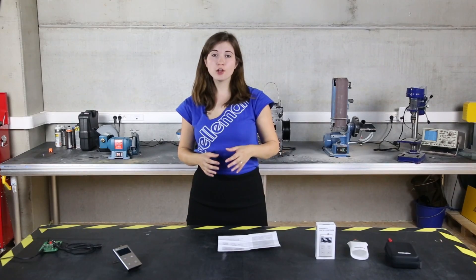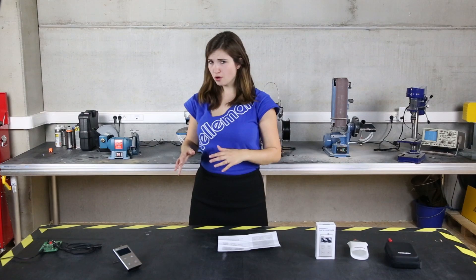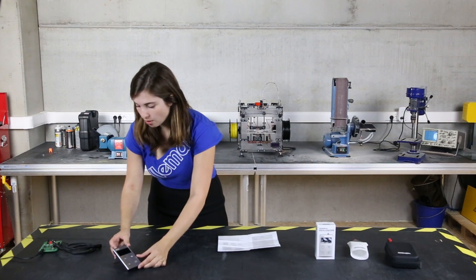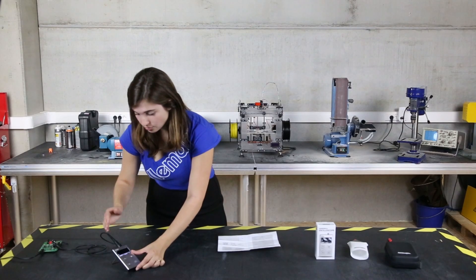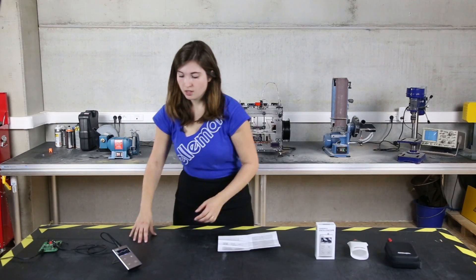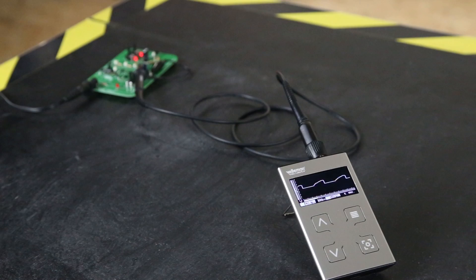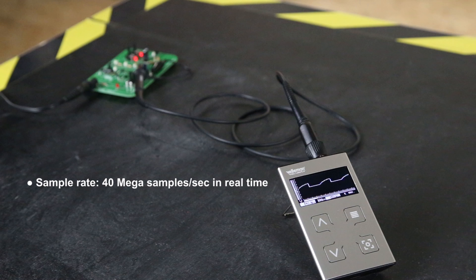Now the scope has a full automatic measuring system. So all you need to do is turn the scope on, connect your probes and you can start reading the signal. The most important features of the scope is that the sample rate is 40 mega samples per second in real time, it has a sensitivity down to 0.1 millivolt and it also has a memory hold function.